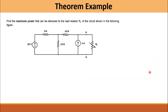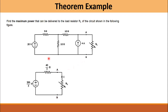Now let's solve an example to see how we apply this theorem. This is a circuit in which R_L represents the load resistance. We simplify the circuit and convert both sources into a Thevenin equivalent voltage source of 200/3 volts in series with R_Thevenin and R_L.